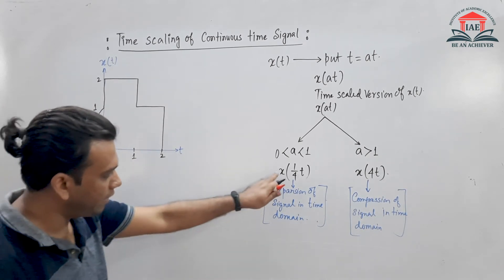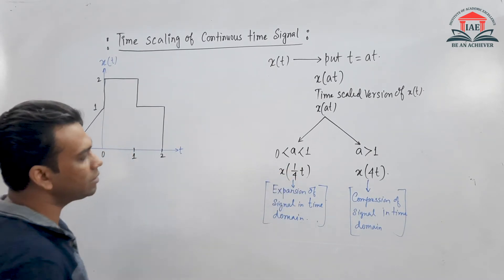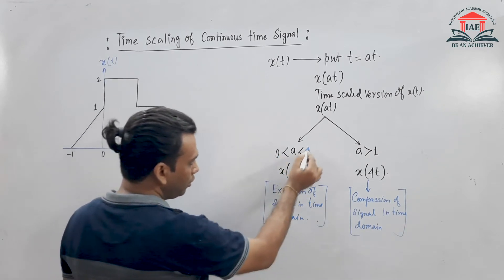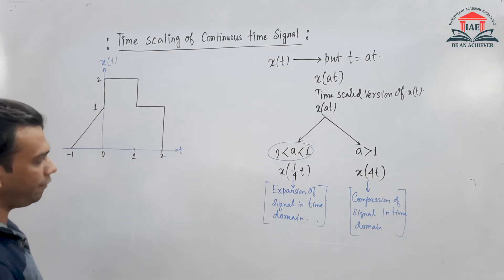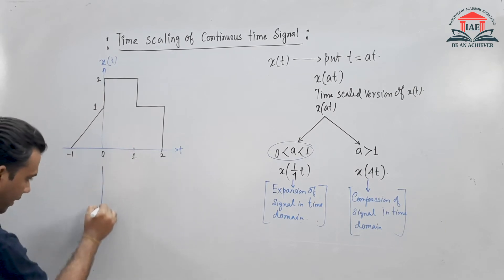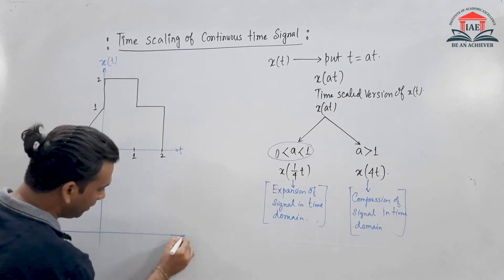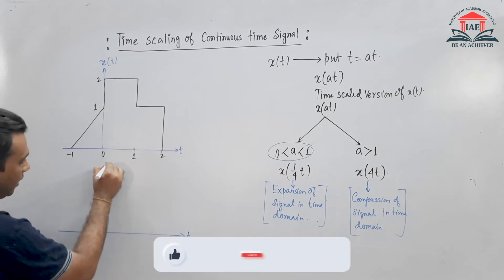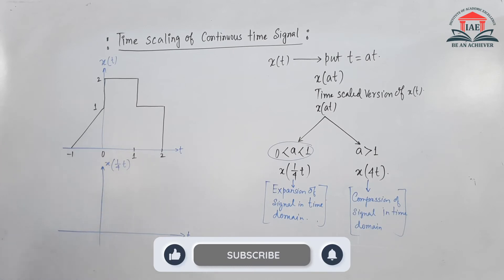For example, x(1/4·t) means the value of 'a' is less than 1 but greater than 0. So what will be the graph of x(1/4·t)? Let us draw the time axis and plot x(1/4·t).